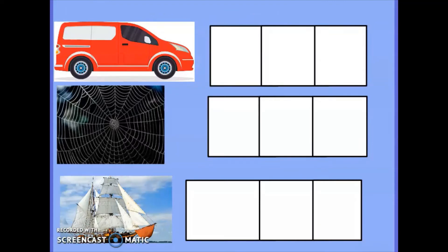Right then let's look at these pictures here. What do we have there? We have a van. Can you segment the word van for me please? Let's do it together. V ah n van. Let's write it. V ah n van. Well done. The next picture that we've got is a web. Let's have a go at segmenting that together. W eh b web. Let's write it. You can write this down on a piece of paper if you like. W eh b. Well done.